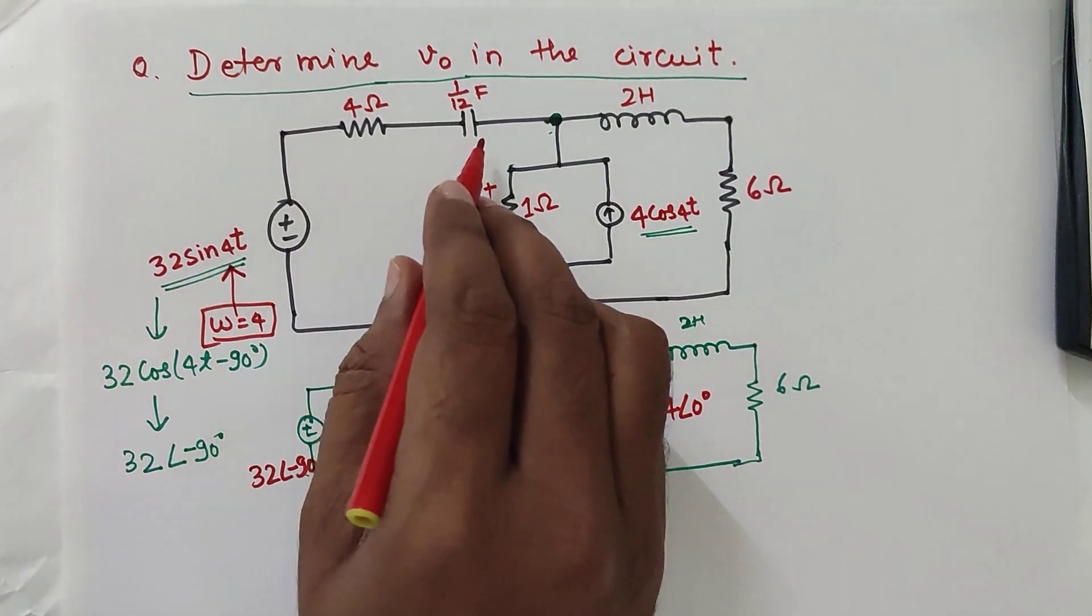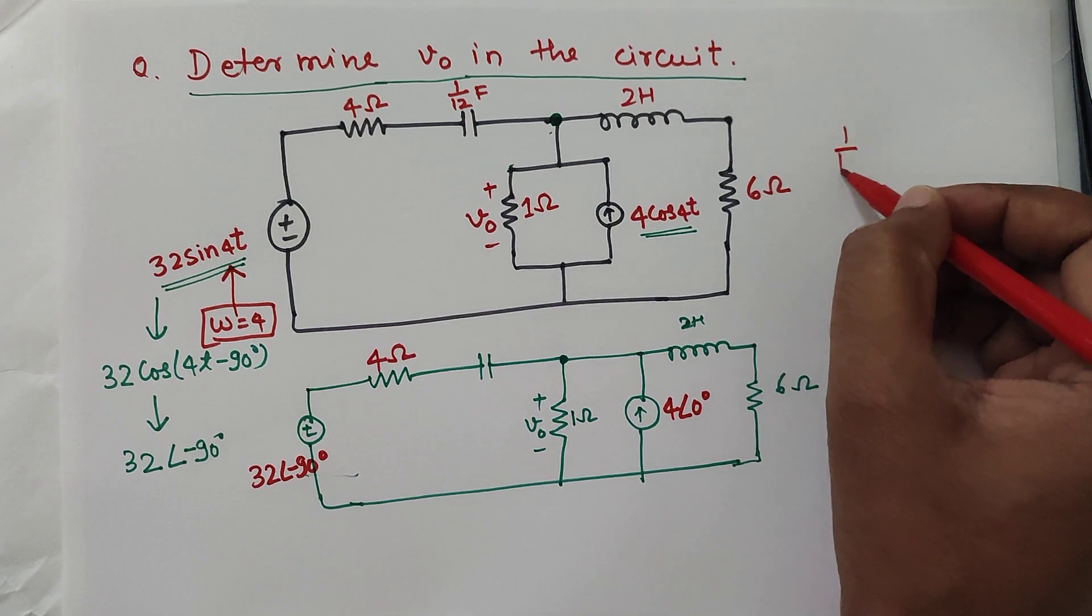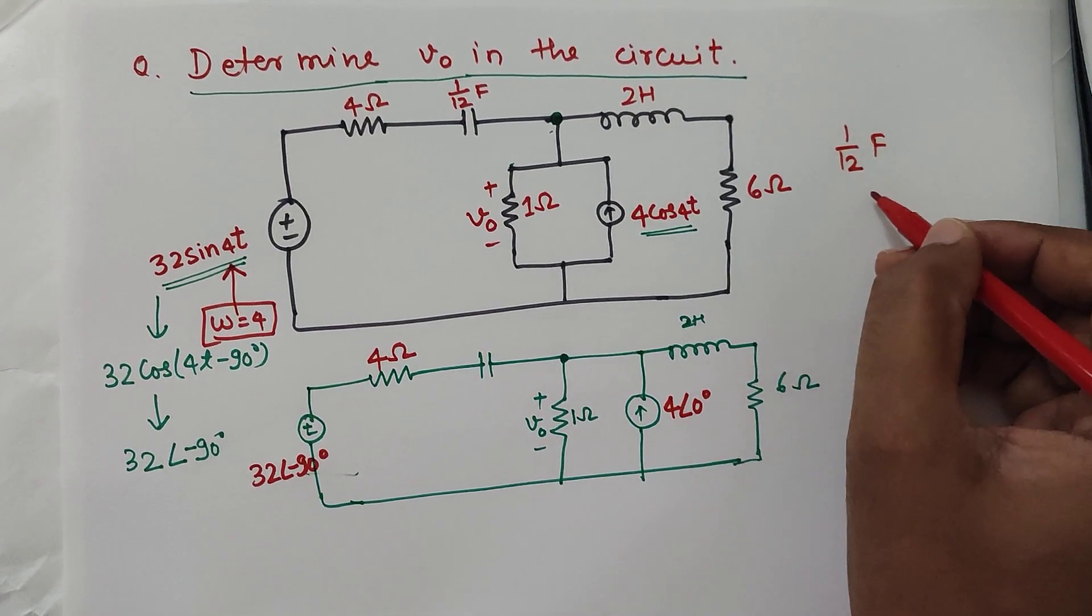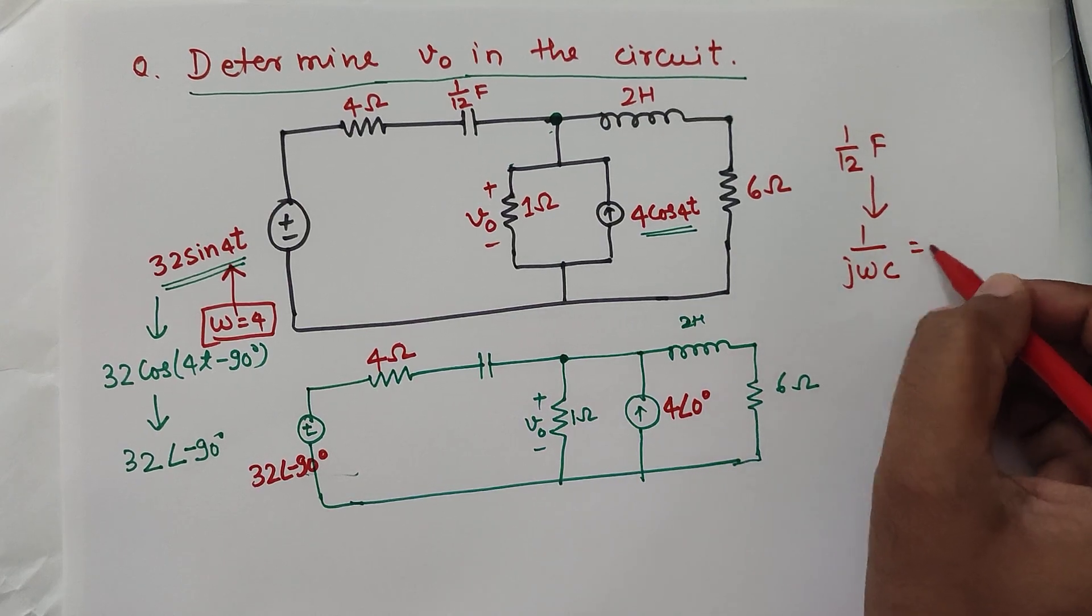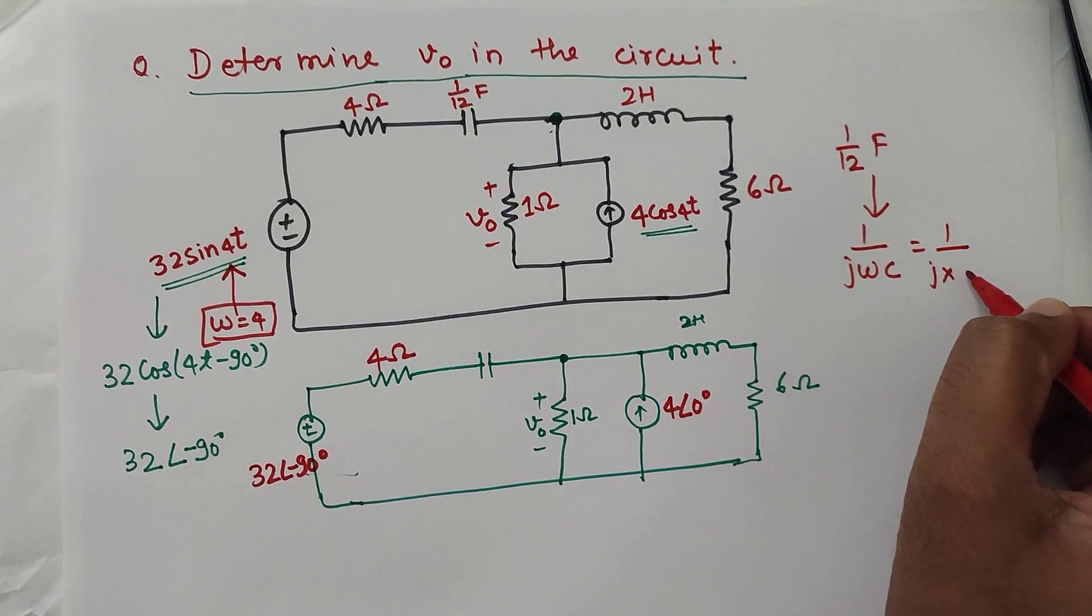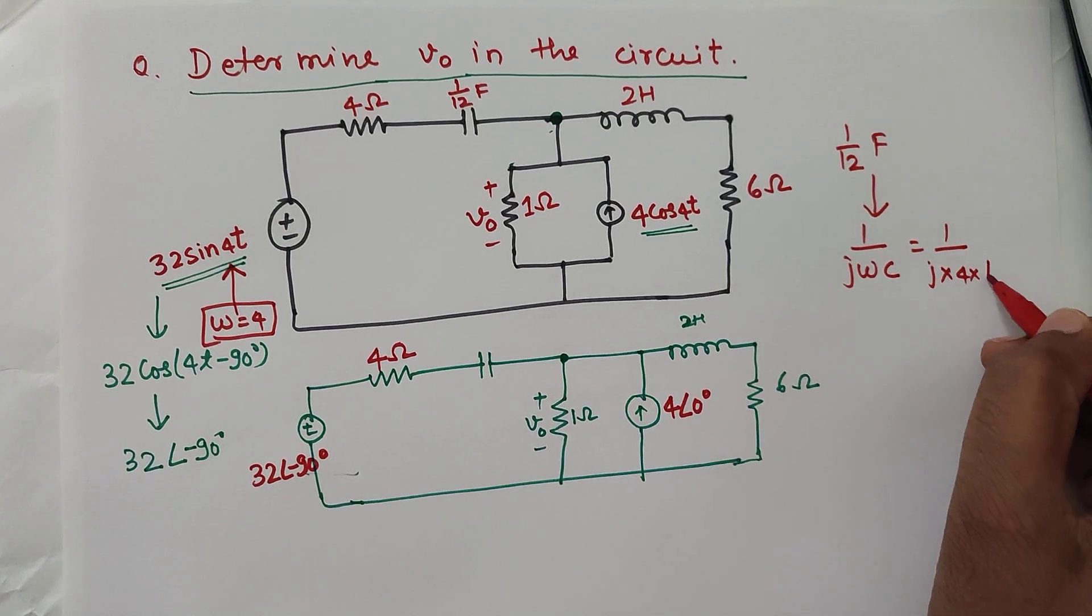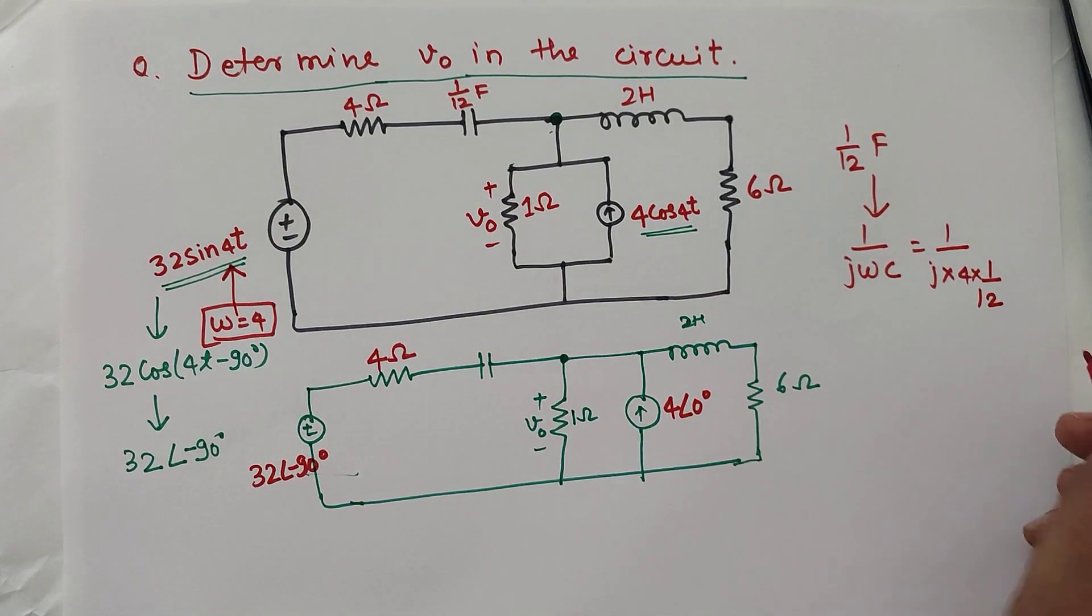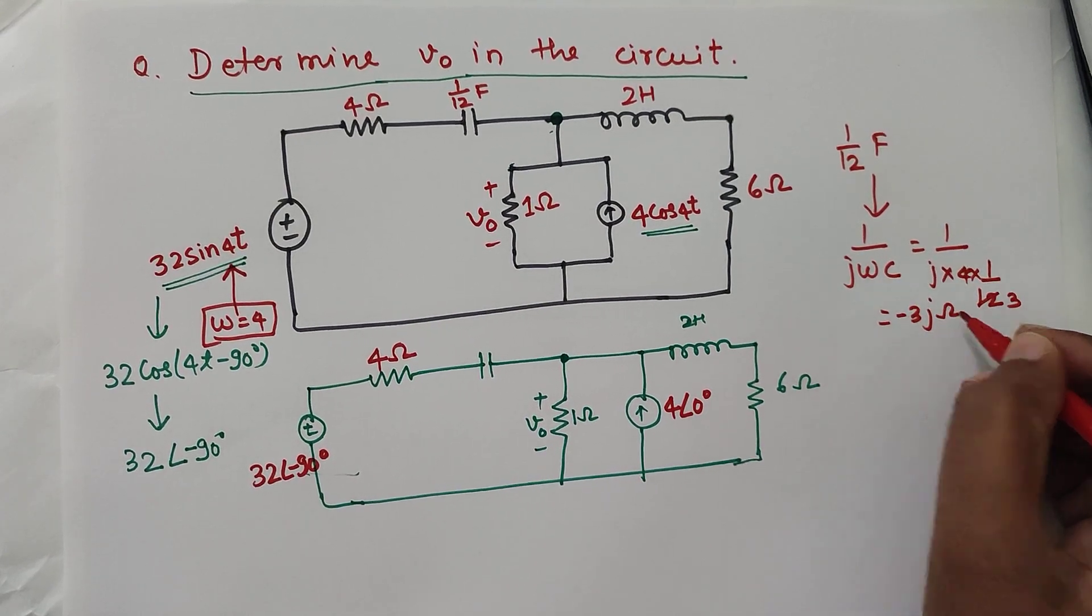Use that to calculate the reactance of capacitor and inductor. So 1 by 12 farad can be converted into 1 by j omega c. So 1 by j into omega, omega is 4 and capacitance is 1 by 12. It's minus 3j ohm.